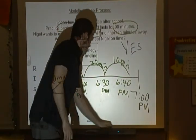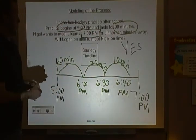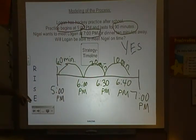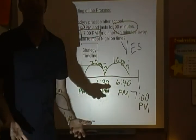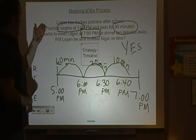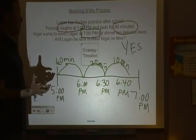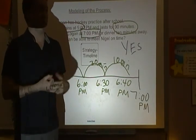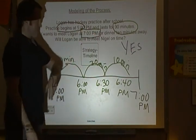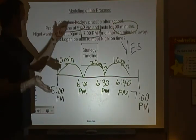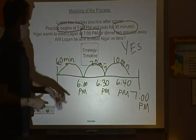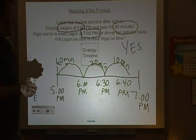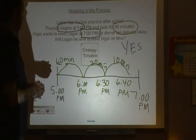Yes! Logan will be able to meet Nigel on time because he would be there at 6:40 — he'd actually be early. The last step in the RISE strategy is E: Examine and Explain. Does it make sense? Logan began practice at 5 p.m. One hour is 60 minutes, so two hours would be 120 minutes. Practice is 90 minutes, so it's between one and two hours — it ends somewhere between 6 and 7. It ended at 6:30, plus 10 minutes of travel is 6:40. That checks out and makes sense.